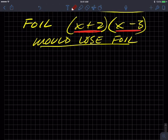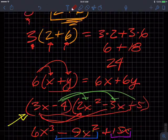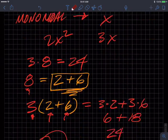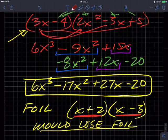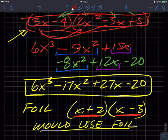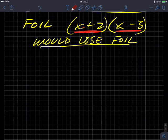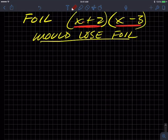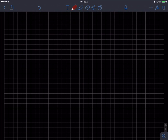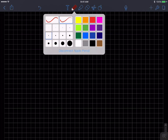FOIL will not work on this, this trinomial times that binomial. It will not work. First times outer, oh first these two, outer those two, inner these two, last those two, and you forget this term altogether. So FOIL doesn't work, or only works in the case of a binomial times a binomial. So it's very limited. Just get the idea that every term in one polynomial has to be multiplied times every term in the second polynomial.